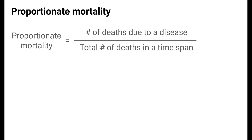Another way of measuring mortality is called proportionate mortality. Proportionate mortality is the number of deaths due to a specific disease out of the total number of deaths in a given time span. It gives us a way of identifying major causes of death because it allows us to answer the question: most deaths are due to what disease?